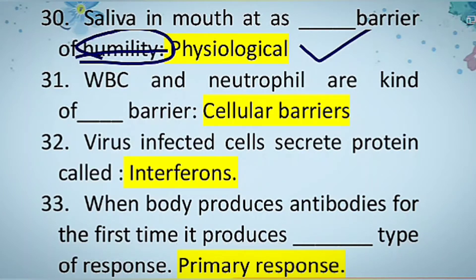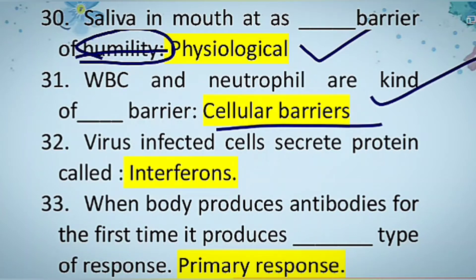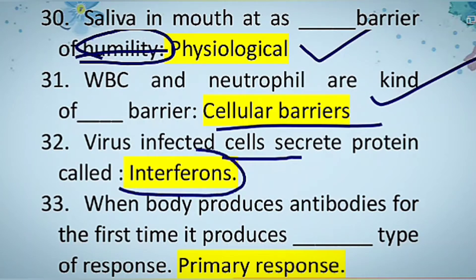The next question: WBCs and neutrophils are a kind of which type of barrier? They are a cellular barrier. The next question: virus-infected cells secrete a protein called interferon.